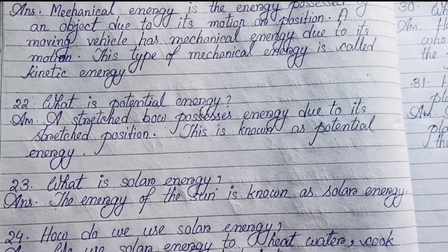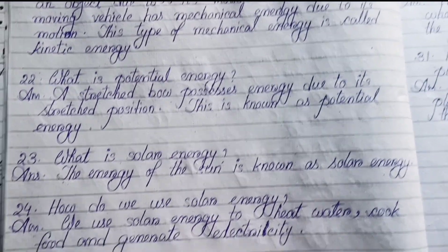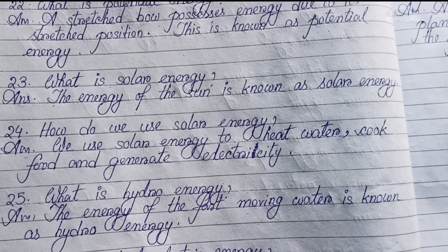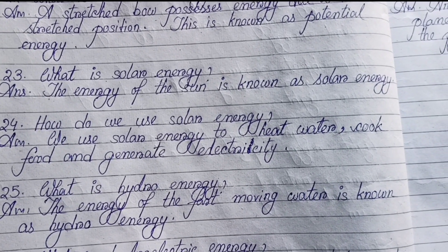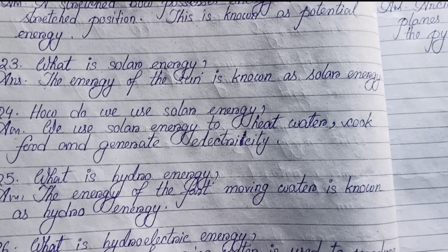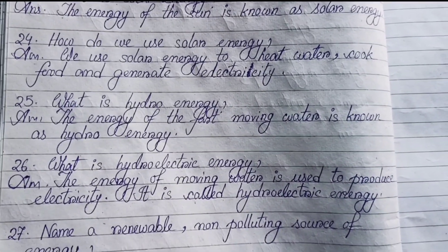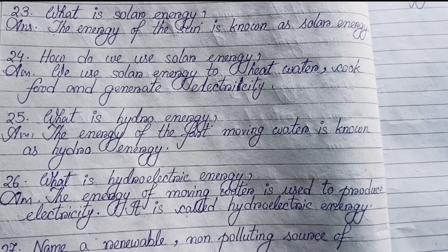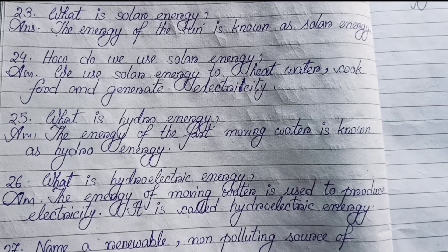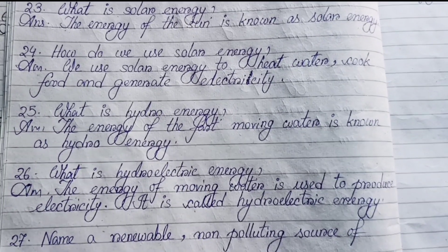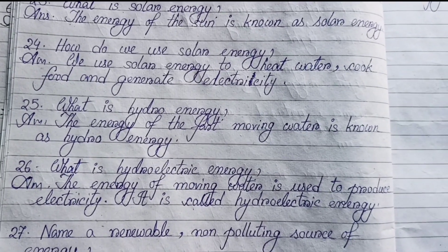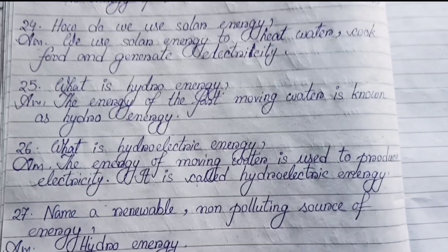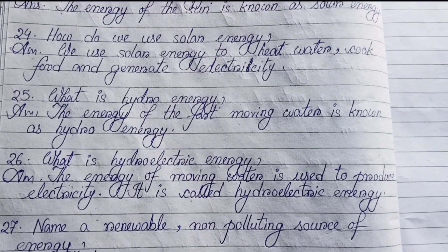Number twenty-three: What is solar energy? The energy of the sun is known as solar energy. Number twenty-four: How do we use solar energy? We use solar energy to heat water, cook food, and generate electricity.